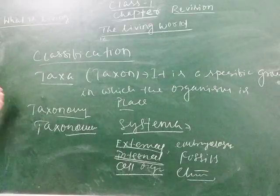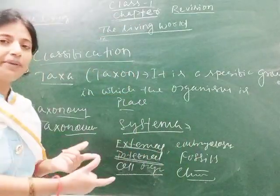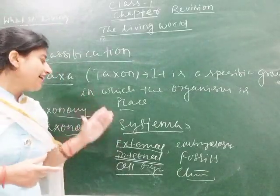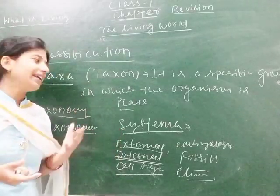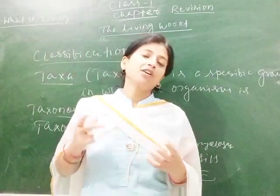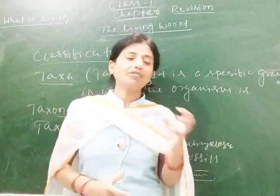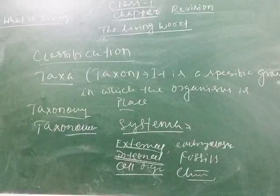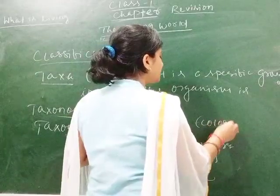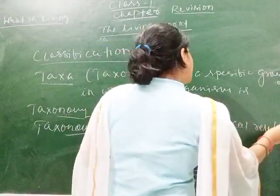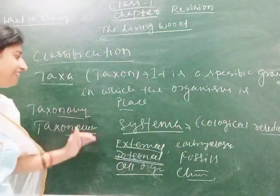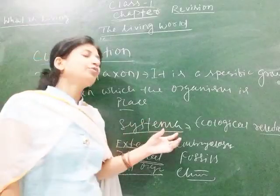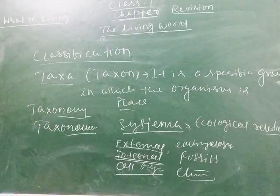Systematics represents any character due to which organisms are placed in the same group — like human beings, monkeys, cats, dogs all being put in the same class. During embryonic development inside the mother's body, vertebrates have a period when they look similar, which is why embryology is an important factor for systematics and classification. Ecological relationship is also included. If the question asks what is systematics and how it helps in classification, you can write these characters and explain how organisms are put into different taxa for easy understanding.